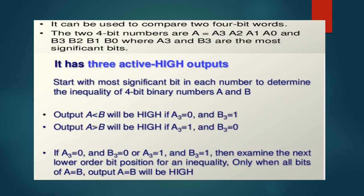The 4-bit magnitude comparator has three active high outputs. Start with the most significant bit in each number to determine the inequality of 4-bit binary numbers A and B. First output A less than B will be high if A3 equal to 0 and B3 equal to 1. Next output A greater than B will be high if A3 is equal to 1 and B3 is equal to 0.